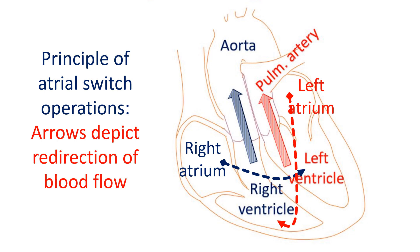While the arterial switch redirects the arteries arising from the ventricles, the atrial switch reroutes the blood coming to the atria. In the atrial switch, blood returning to the right atrium is redirected to the left ventricle. Similarly, blood returning from the lungs to the left atrium after oxygenation is redirected to the right ventricle. So, though the position of the arteries is not corrected, the type of blood which they receive is what they should have received normally.